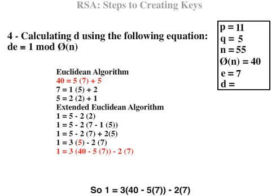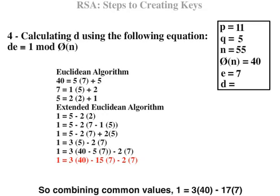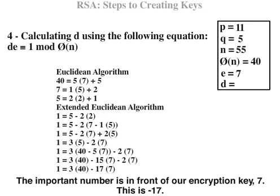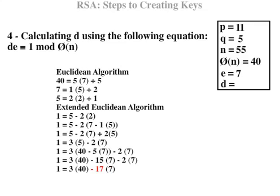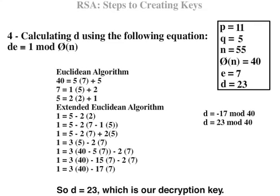So 1 equals 3 times (40 minus 5 times 7) minus 2 times 7. Extending this equation gives 1 equals 3 times 40 minus 15 times 7 minus 2 times 7. So combining common values: 1 equals 3 times 40 minus 17 times 7. We now have the 2 original values 40 and 7. The important number is in front of our encryption key 7. This is minus 17. Because this is negative, we calculate D equals minus 17 modular 40. So D equals 23, which is our decryption key.